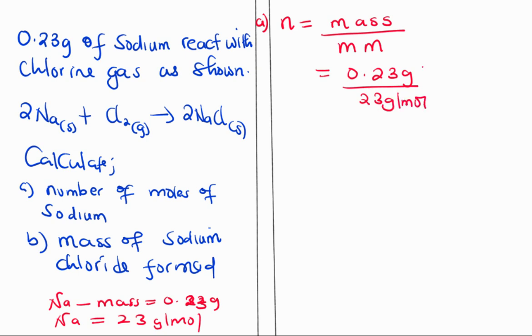Gram and gram cancel. 0.23 divided by 23 is 0.01, so we have 0.01 moles of sodium. Part b says mass of sodium chloride formed.